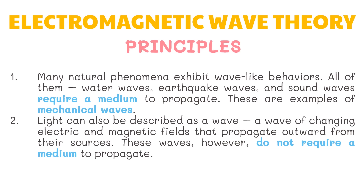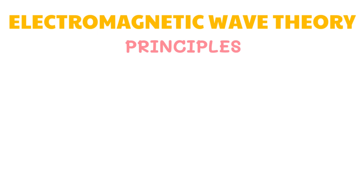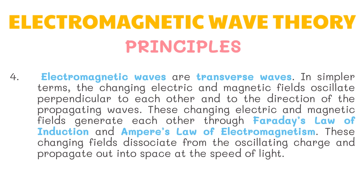Second, light can also be described as a wave — a wave of changing electric and magnetic fields that propagate outward from their sources. These waves, however, do not require a medium to propagate. Third, they propagate at 300 million meters per second through a vacuum. Fourth, electromagnetic waves are transverse waves — the changing electric and magnetic fields oscillate perpendicular to each other and to the direction of the propagating waves. These changing electric and magnetic fields generate each other through Faraday's law of induction and Ampère's law of electromagnetism.